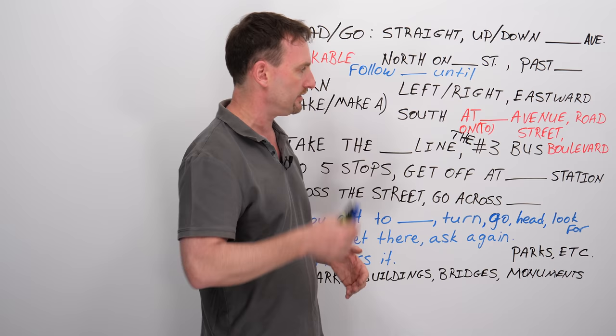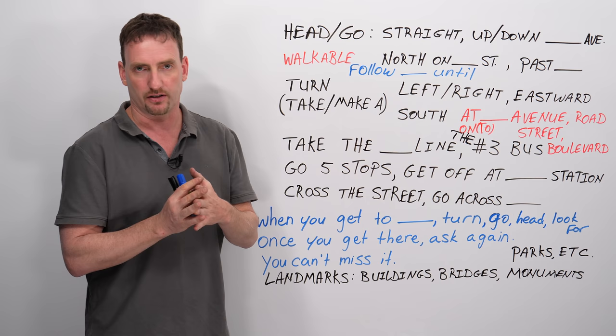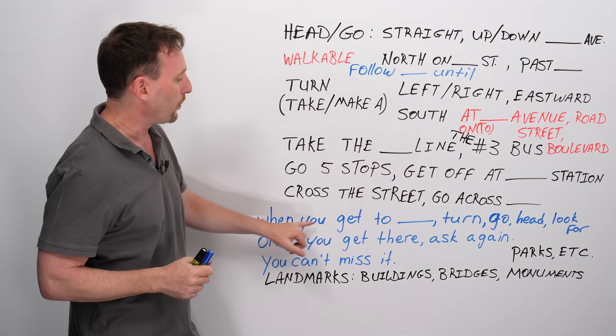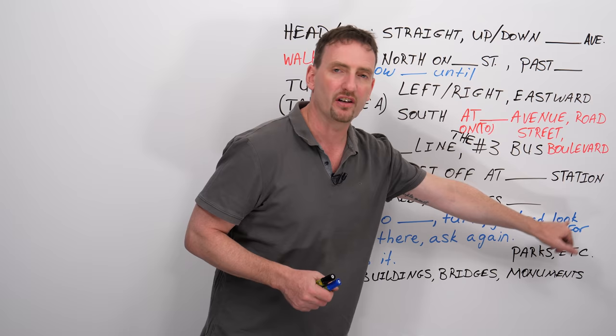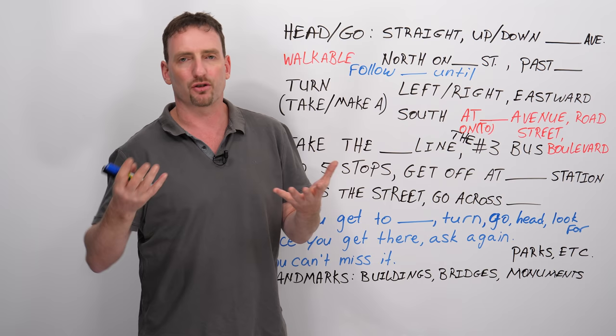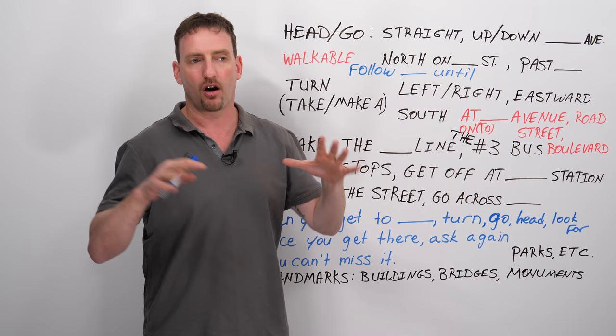Now, sometimes they're going to give you relative directions. They're going to tell you how to get to one place, and then from this place, they're going to give you further directions. So when you get to the intersection, when you get to the mall, when you get to the park, turn left, go straight, head down, look for. Look for is very, very useful because now we're introducing landmarks. Landmarks are things or objects or situations that are very easy to see, very recognizable. The people who live in the place, everybody knows what this place is, so it's easy to point out.